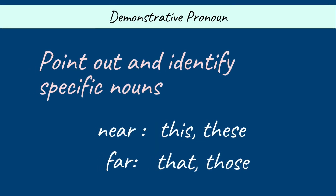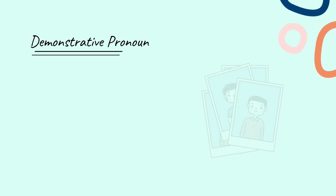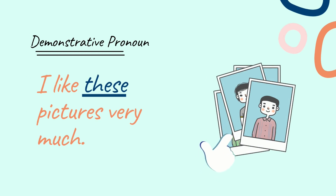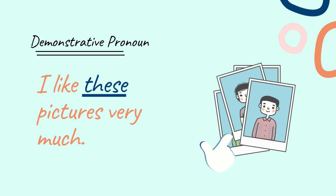Number five: Demonstrative pronoun. It is used to point out and identify specific nouns. They refer to objects near or far in distance. The pronouns showing nearness are 'this' and 'these', and the pronouns showing far objects are 'that' and 'those'. For example: 'I like these pictures very much.' Here, the demonstrative pronoun 'these' is used to refer to a nearby object.